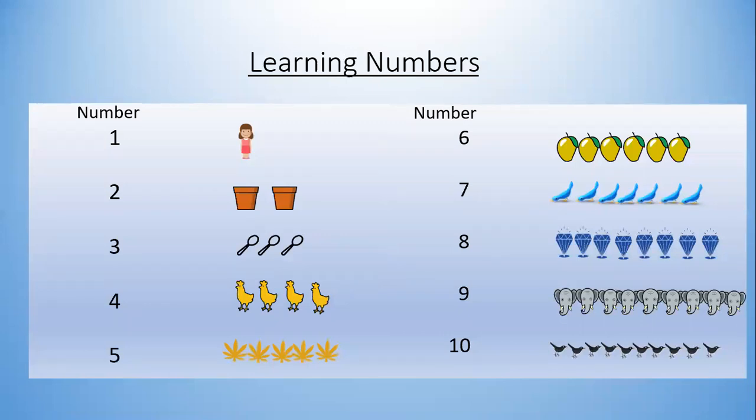One: one apple. Two: two ones. Three: one, two, three — here you can see three spoons.